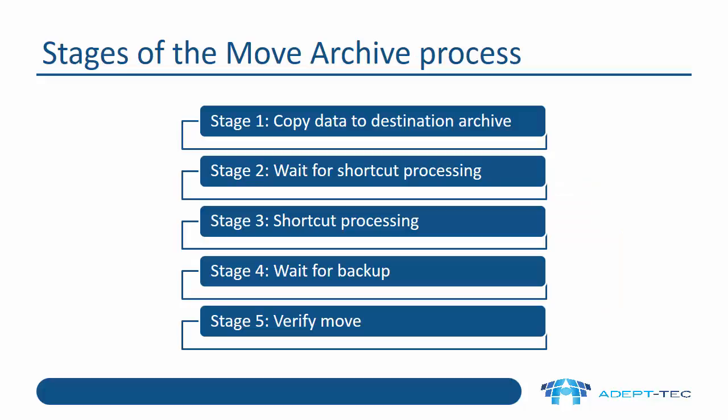There are five stages of the move archive process, which we can see in the move archive status window. Stage one is where data is copied to the destination archive. Stage two is where the process is waiting for shortcut processing to happen. Stage three is when shortcut processing actually happens. Stage four is waiting for backup of the destination archive. Stage five is verifying that every item has been moved successfully.